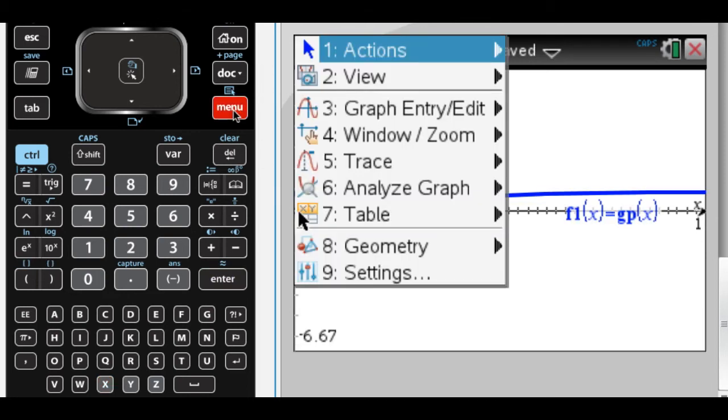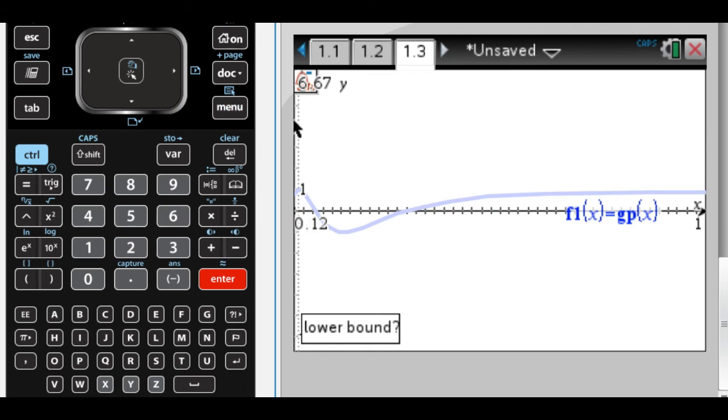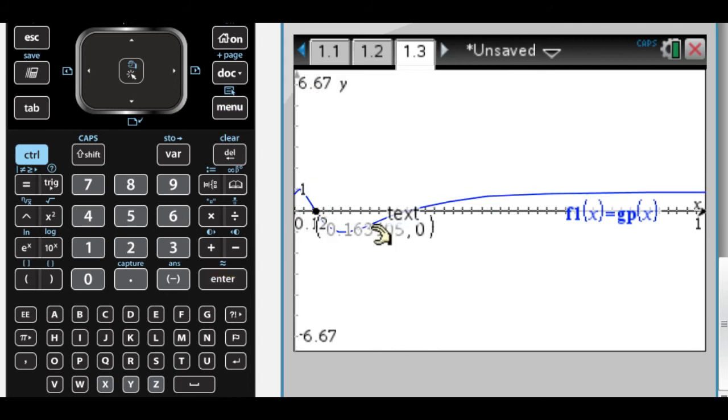All right, and let's find those zeros. First zero is 0.163.